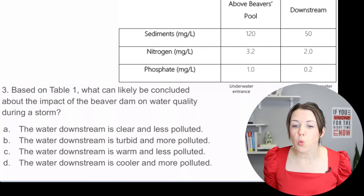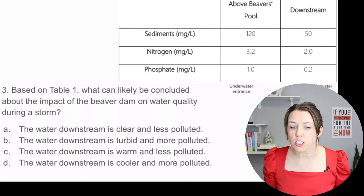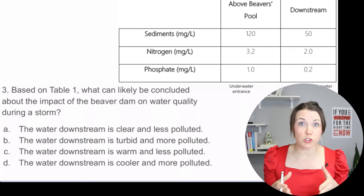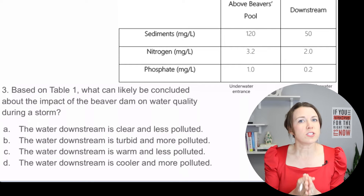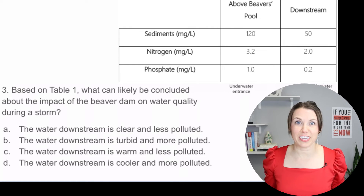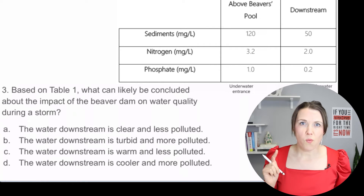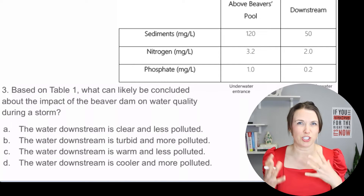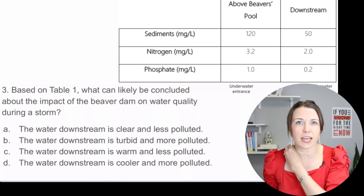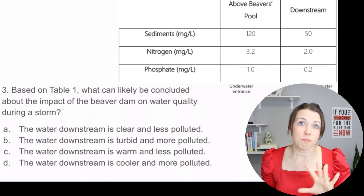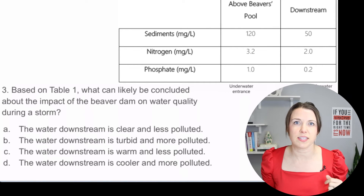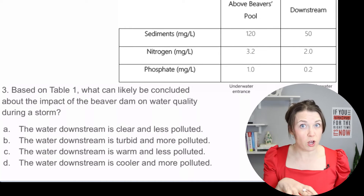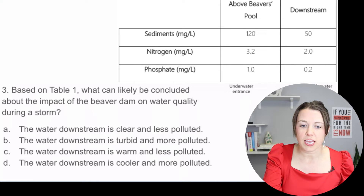Based on table one, what can be concluded about the impact of the beaver dam on water quality during a storm? Think about your own experience — when you look at a small stream or creek, the water is generally clear, but after a storm it becomes mucky and dirty. Looking at the table, in the pool area before the dam there's a lot of sediment, but after, those numbers drop significantly. So the answer is A — downstream is clearer and less polluted.